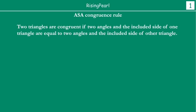What is ASA congruence rule? What is the angle side angle congruence rule? ASA congruence rule states that two triangles are congruent if two angles and the included side of one triangle are equal to two angles and the included side of the other triangle.